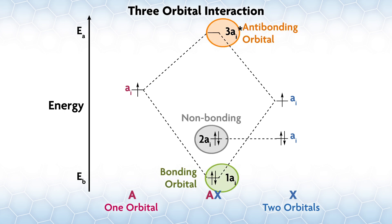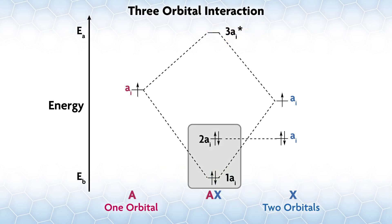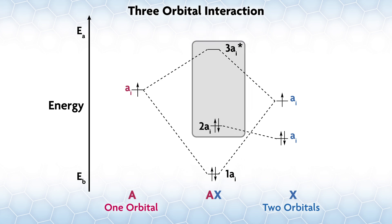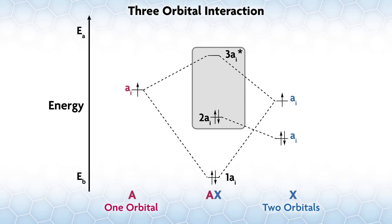In reality, all the orbitals in the same irreducible representation can mix. So 2Ai can mix with the bonding one 1Ai, which will raise the energy of 1Ai and lower 2Ai. Alternatively, 2Ai could mix with the antibonding orbital, raising the energy of 2Ai and lowering 3Ai. Again, knowing which of these will happen depends on having more information about the system than just the symmetry, which is our focus here.